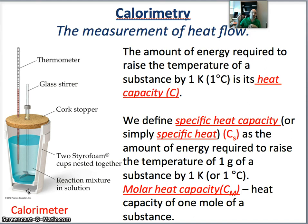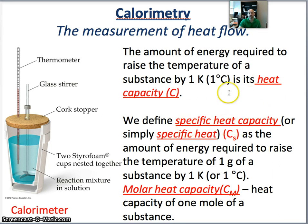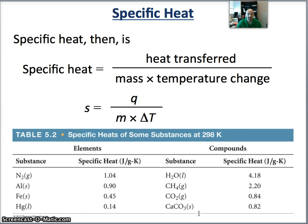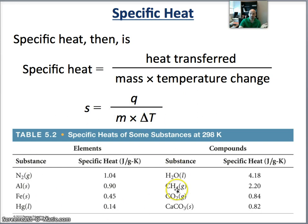The amount of energy required to raise the temperature of a substance by one Kelvin or one degree Celsius is what we call the heat capacity. More specifically, we define the specific heat capacity, or specific heat, abbreviated Cs — it's the amount of energy required to raise the temperature of one gram of a substance by one Kelvin or one degree Celsius. We also have a molar heat capacity, Cm, which is the heat capacity of one mole of a substance. The specific heat Cs is equal to the heat transfer divided by the mass of the sample times the change in temperature. Some specific heat values are given at the bottom.